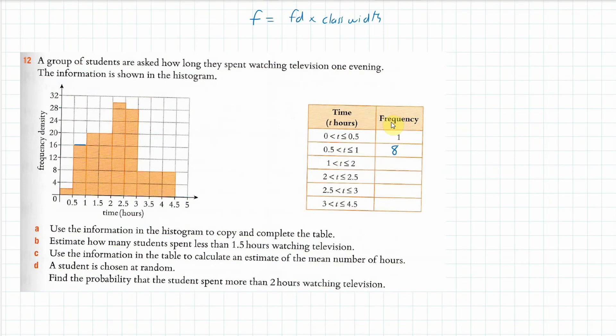The next one has a width of 1 and frequency density of 20, so 1 times 20 is 20. The next one has a width of 0.5 and frequency density of 30, so 0.5 times 30 is 15.